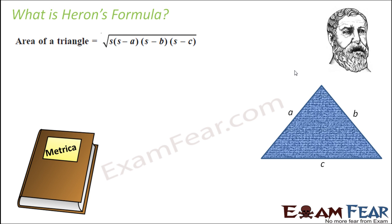What is Heron's formula? Heron's formula is a formula given by Heron. He is from Egypt. And he gave a formula to find area of any triangle whose sides are known.